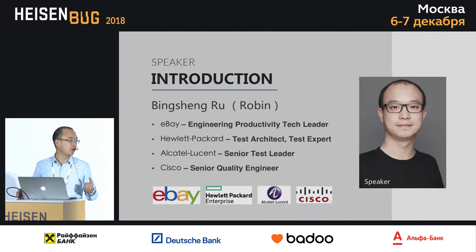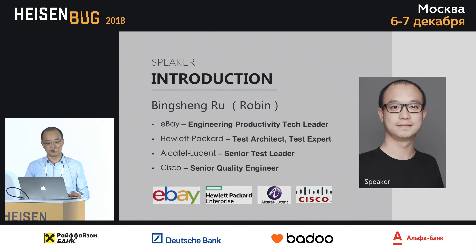I'm Robin Lu, from eBay, working as an engineering productivity tech leader covering the overall test structure and key infrastructure for a lot of eBay product lines. Before that, I worked at HP and Alcatel-Lucent as a test architect mainly focused on automation test, performance test, and test development tools at the company level. At Cisco I worked as a senior quality engineer doing automation for switching and video systems, including functional test and BDD.